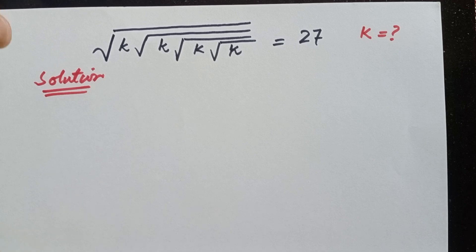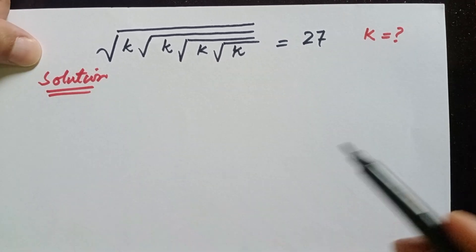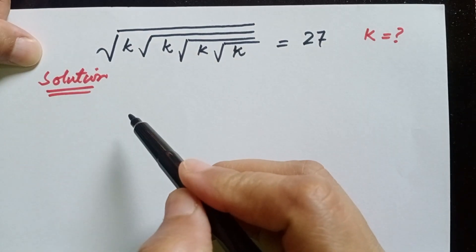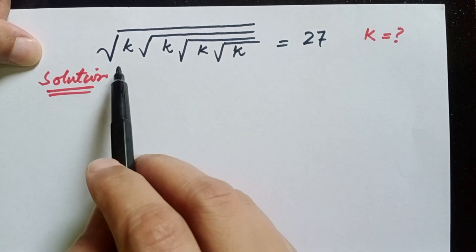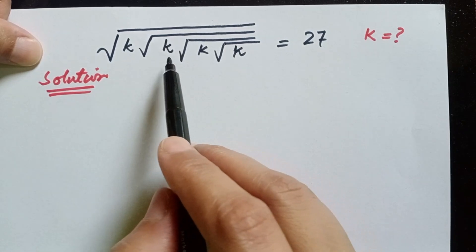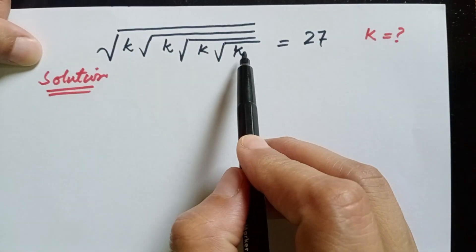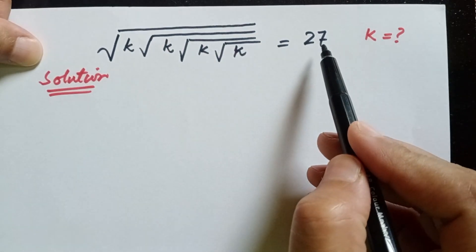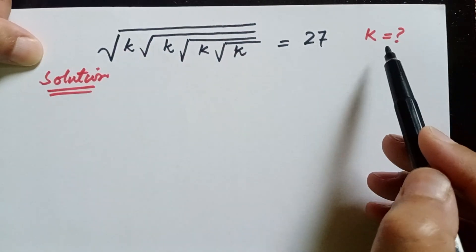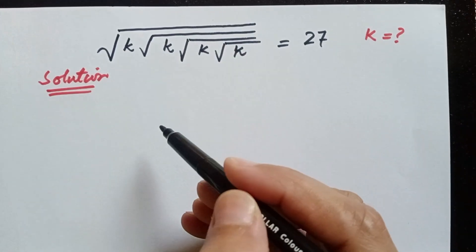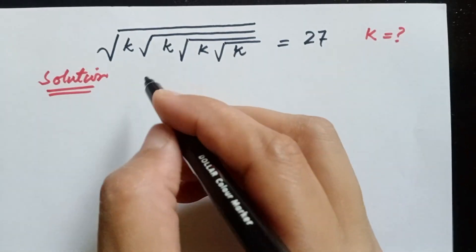Hi everyone, welcome back to Brain Equation. In today's video we are going to solve the question: square root of k times square root of k times square root of k times square root of k is equal to 27, where k is unknown. So let's start our question to find out the value of k.